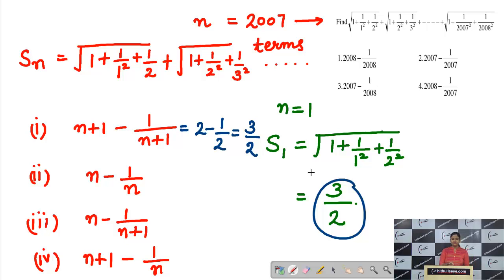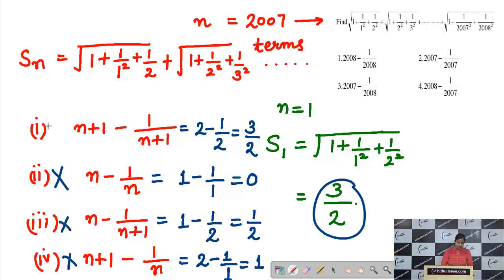But we cannot confirm that it is the only possibility. So we will check other options as well. Now if we take N as 1 in second option we'll get 0. Definitely this is not the answer because my answer should be 3 by 2. If we take next option it will be 1 minus half which will give you half. If we take next option it will give you 2 minus 1 upon 1 which comes out to be 1. Again third and fourth they all are rejected. That's why only first option we are left with and this is the answer.